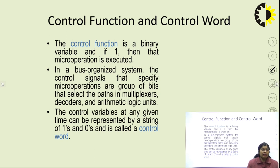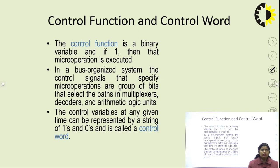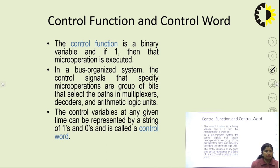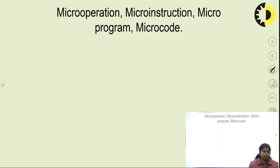If the control function is 1, it is the enable value and the micro operation is going to be executed. In a bus-organized system, the control signals specifying micro operations are groups of bits that select paths in the multiplexer, decoded in the arithmetic logic unit.